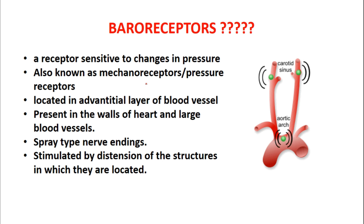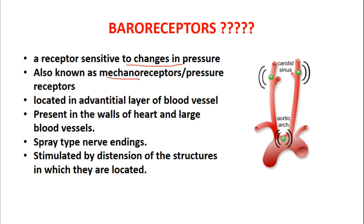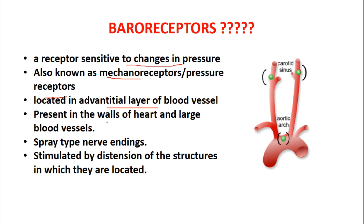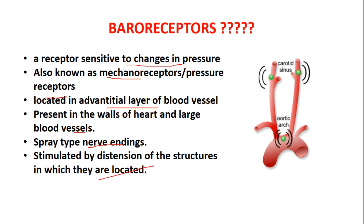Baroreceptors are receptors sensitive to changes in blood pressure, or simply pressure. These are also known as mechanoreceptors or pressure receptors. These receptors are located in the adventitial layer of blood vessels, present in walls of the heart and large blood vessels. These are spray type nerve endings, stimulated by distension of the structures in which they are located. When the blood vessel stretches, there will be stimulation of the baroreceptors and signals will go towards the brain.